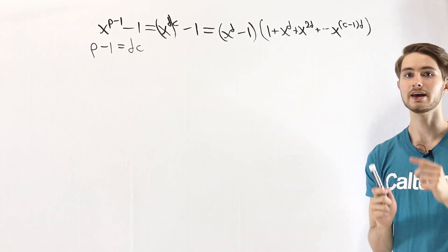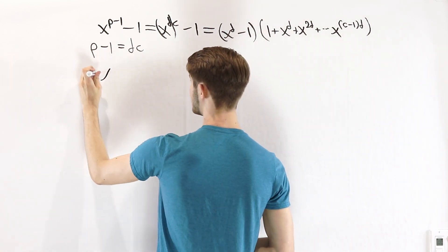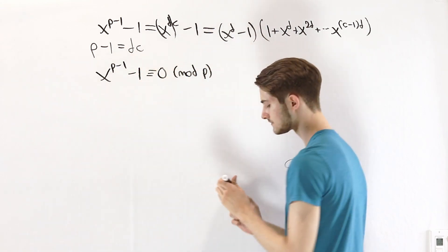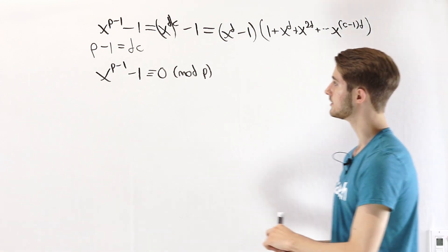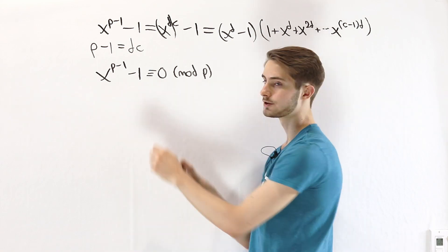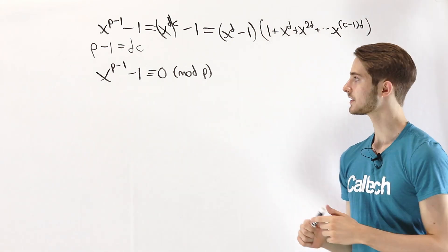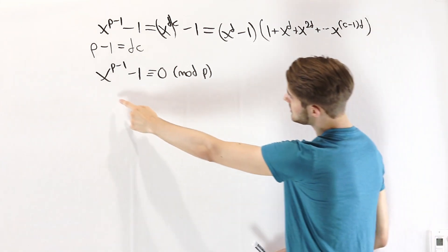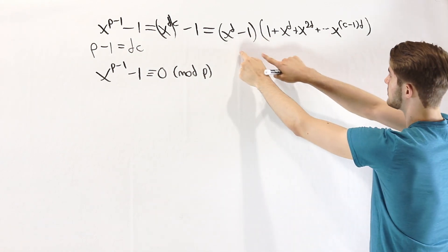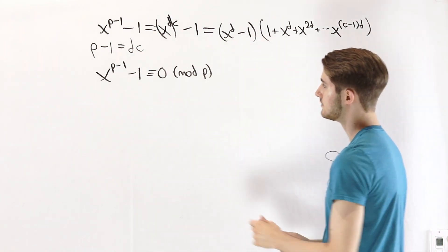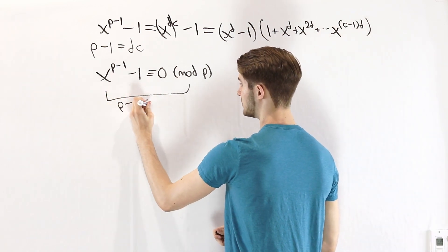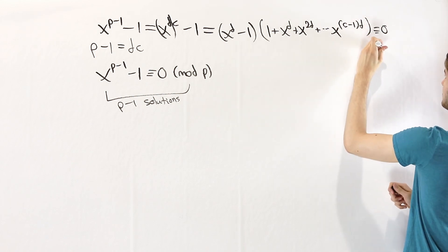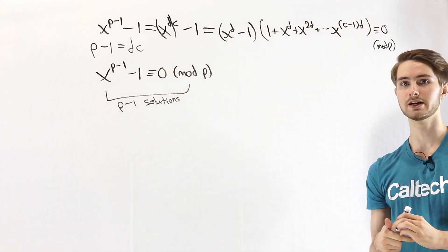From here, we're going to take a look at a polynomial congruence. In particular, let's consider the congruence x to the p minus 1 minus 1 is congruent to 0 mod p. Now by Fermat's little theorem, we know that as long as x is not a multiple of p, this congruence is going to have p minus 1 solutions: 1, 2, 3, 4, 5, all the way up to p minus 1. We know that x to the p minus 1 minus 1 is the same as the product we see over here. So if this congruence has p minus 1 solutions, then when we set this product congruent to 0 mod p, that also has to have p minus 1 solutions.